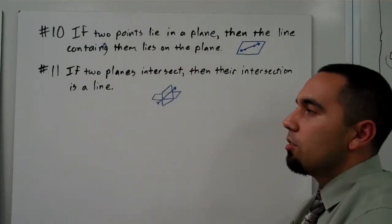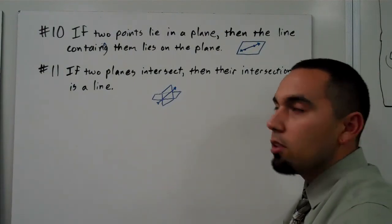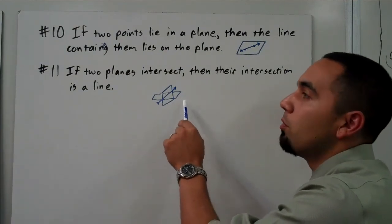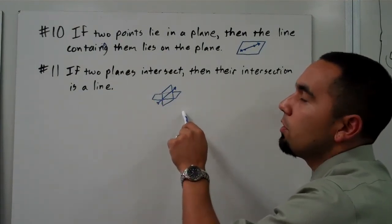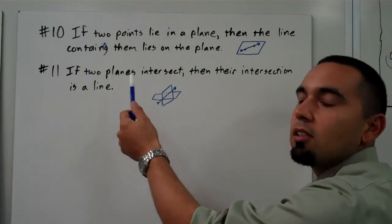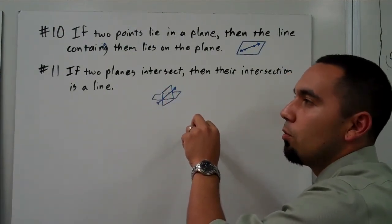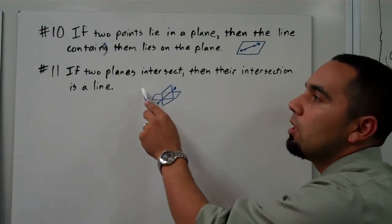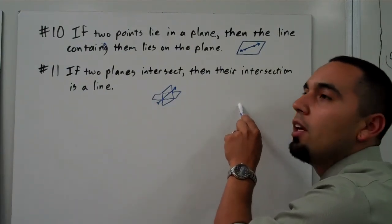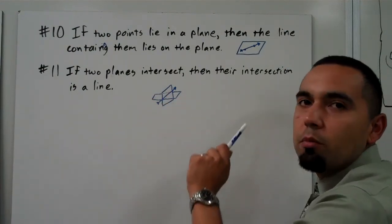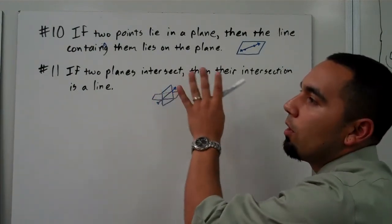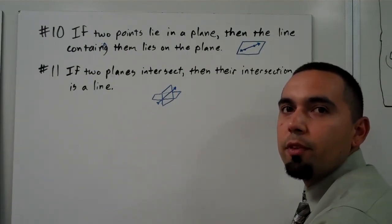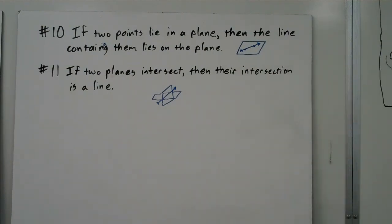So all of these postulates that we just learned, they're real simple statements. But basically how you're going to be using them is you're going to have to look at a diagram and try and either use this statement to prove something, or look at the statement and then prove it with a drawing. So either you're going to have to look at some writing and draw something out using these postulates, or you're going to have to look at a diagram and look at your postulates and prove something that way. But either way, with these postulates and with the drawings that I gave you, we should be able to do our homework. Good luck.